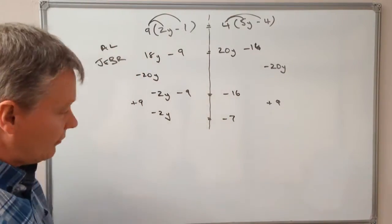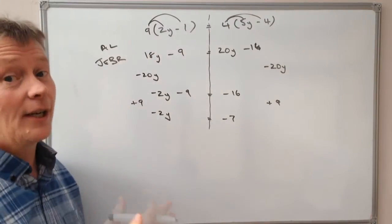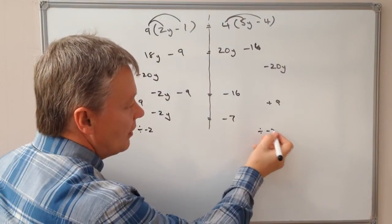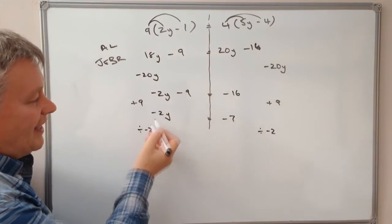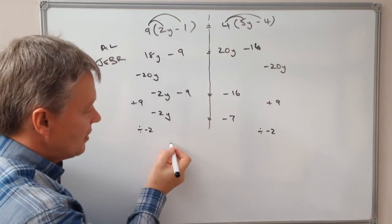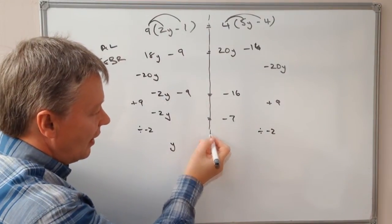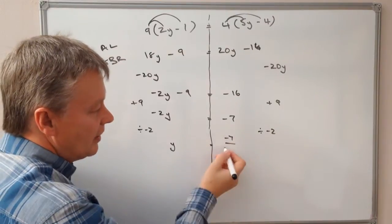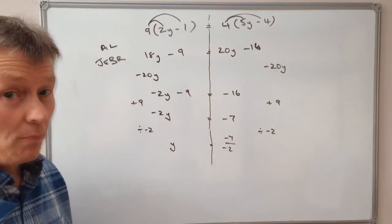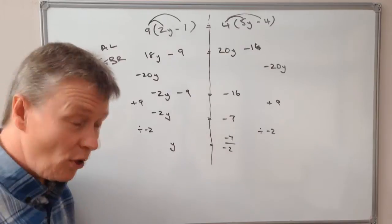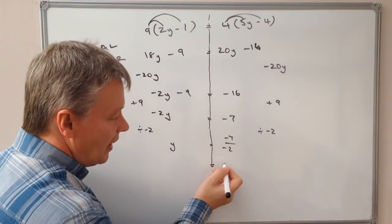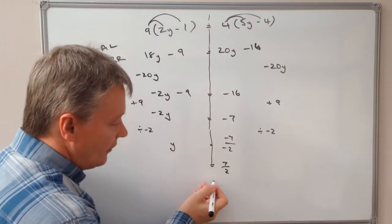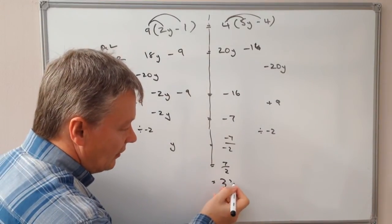So with minus 2y equals minus 7, I'm going to divide both sides by minus 2 to cancel this out and give me y. On this side, I've got minus 7 divided by minus 2. A minus divided by a minus is a positive, so that's 7 over 2, or if you prefer, 3 and a half.